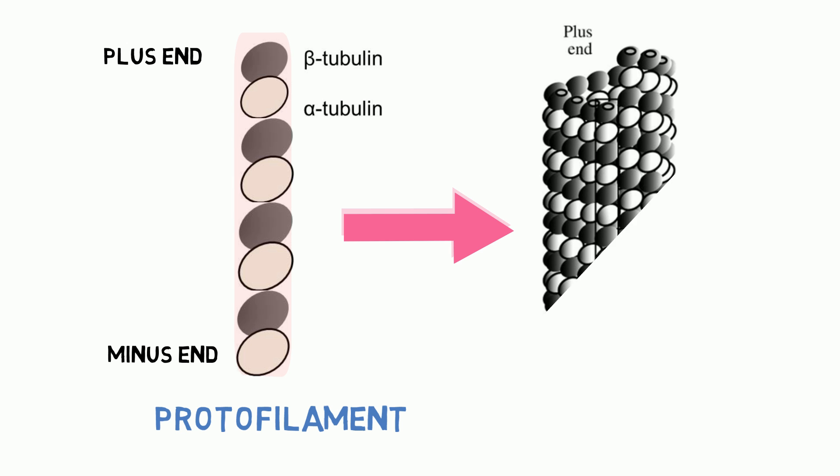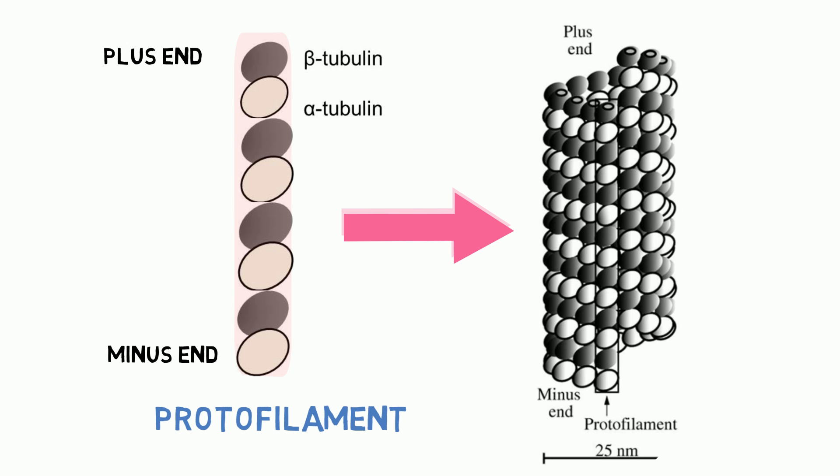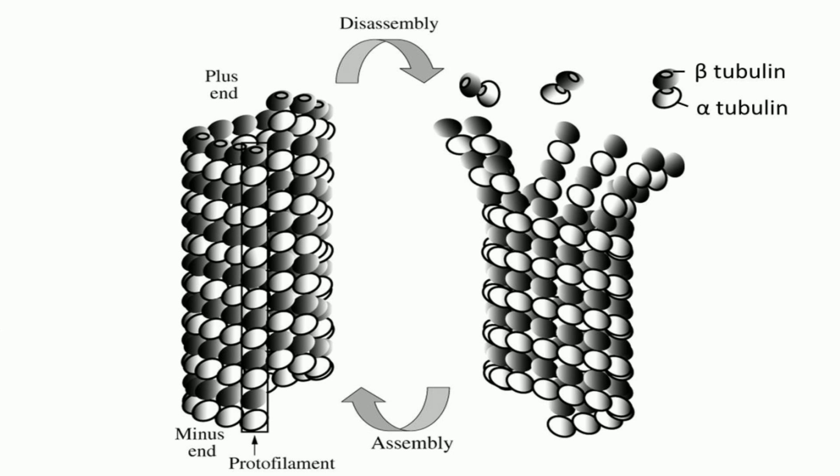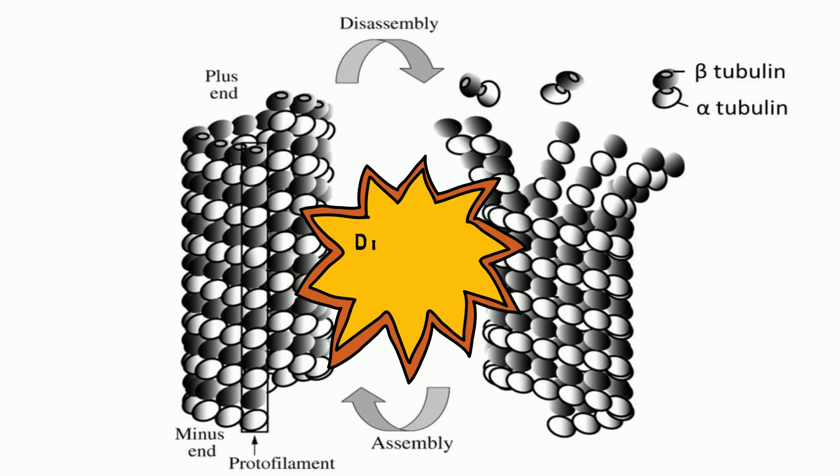A single microtubule is comprised of 13 protofilaments arranged as a hollow cylinder. In the same way that tracks can be lengthened or shortened, the length of microtubules can also become longer through assembly or shorter through disassembly. This ability is known as dynamic instability and is important for microtubules to perform its functions.